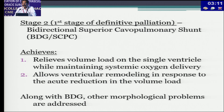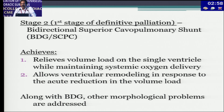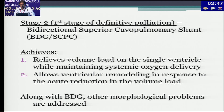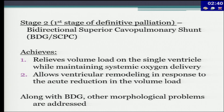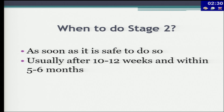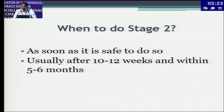Stage two palliation is the first stage of definitive palliation — the Fontan pathway — achieved by a bidirectional Glenn. This relieves volume load on the single ventricle while maintaining systemic oxygen delivery and allows ventricular remodeling in response to the acute volume load reduction. Another advantage of staging is addressing all morphological problems at this stage: incompetent AV valve, PAPVC, and so on. When to do stage two? As soon as it is safe — textbook-wise at 10–12 weeks, but generally at five to six months.